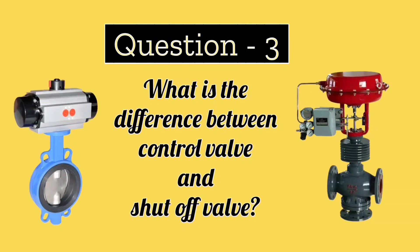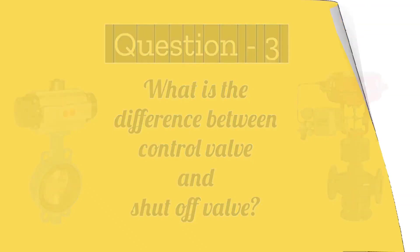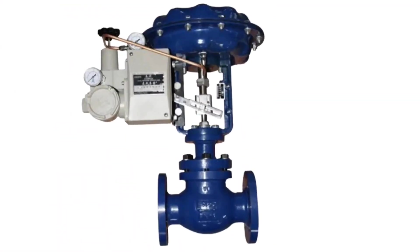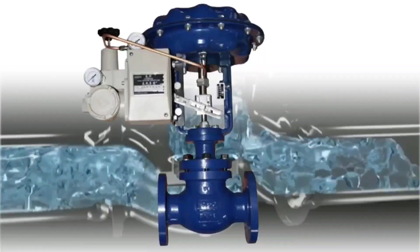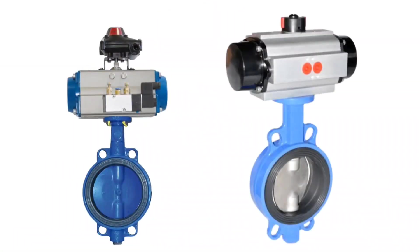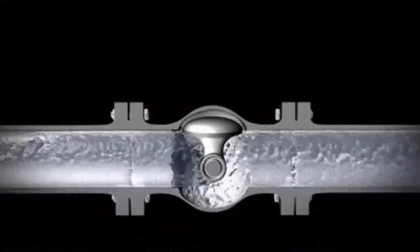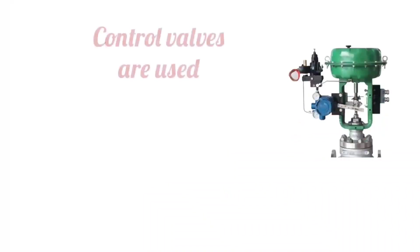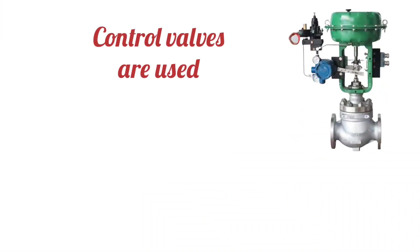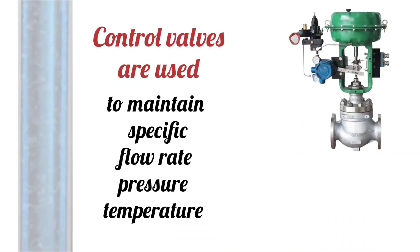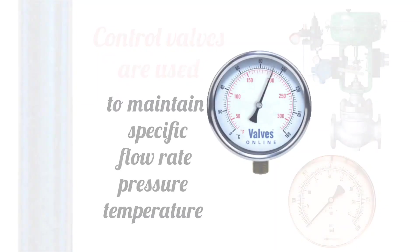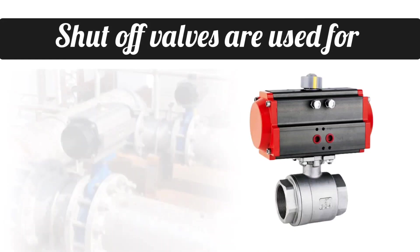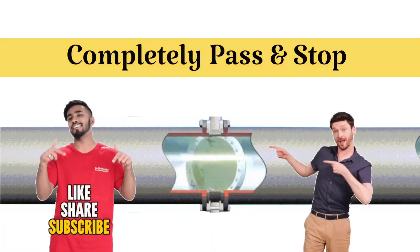What is the difference between a control valve and a shut-off valve? Control valves are used to regulate the flow of fluid, while shut-off valves are used to completely stop the flow. Control valves maintain a specific flow rate, pressure, and temperature, while shut-off valves are used to completely pass or completely stop the flow in a process system.